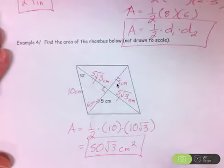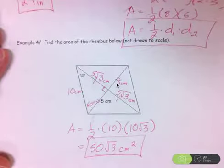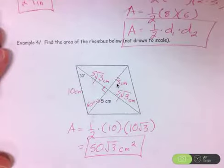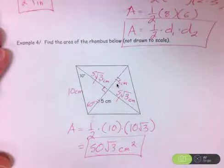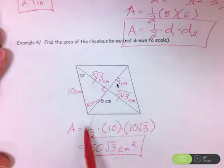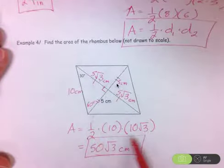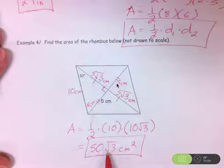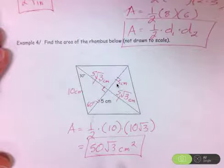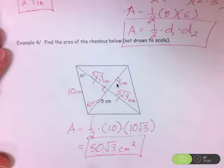Your assignment for tomorrow is a handout with some plotting questions, then a mix of triangles, parallelograms, rectangles, trapezoids, kites, and rhombi. The most important thing is to label your picture and show your work so we can identify any errors. We'll go over it tomorrow and take a quick quiz over area — and you don't have to memorize the formulas; I'll provide them.